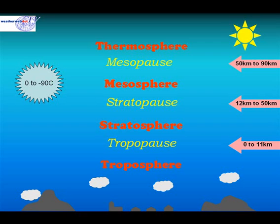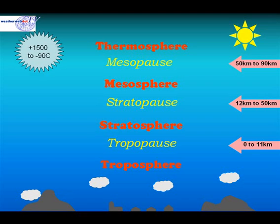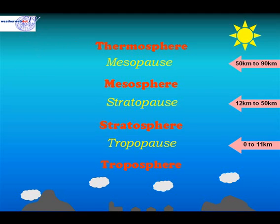In the mesosphere we range from 0 to minus 90 degrees Celsius. And in the thermosphere temperatures range from plus 1500 degrees Celsius to about minus 90 degrees Celsius.